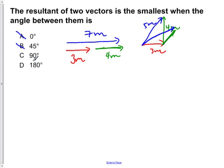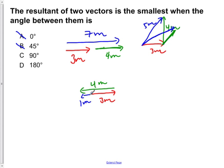So far C, 90 degrees, is our best answer. But if we now look at it this way — we have 3 meters to the east, and then we set our green vector, the 4 meters, at 180 degrees — we would find that our resultant is 1 meter to the west. This is smaller than the 5 meters, so the smallest possible value comes from subtracting the two vectors from one another. Our answer is D, 180 degrees, which results in the smallest magnitude between the two vectors.